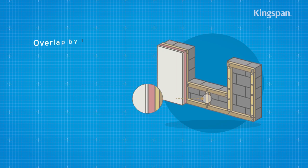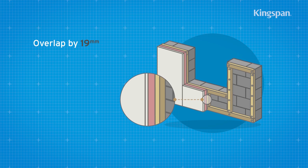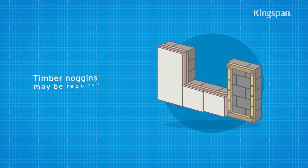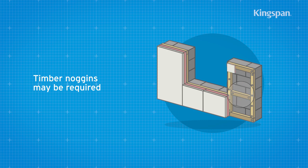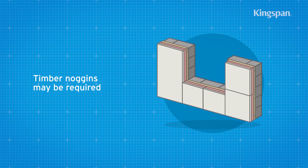Insulated plasterboard sheets should always lap timber battens at the sheet joints. Note that timber noggins may be required where sheets of insulated plasterboard are unsupported.